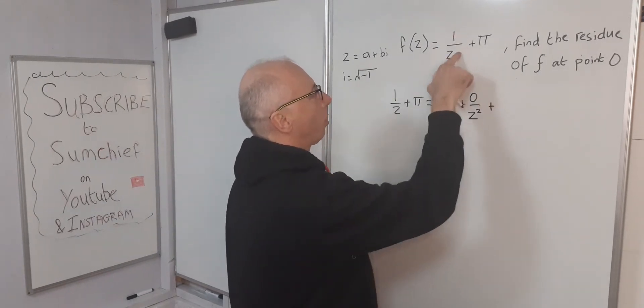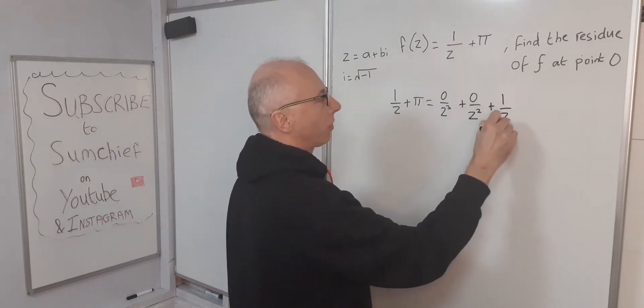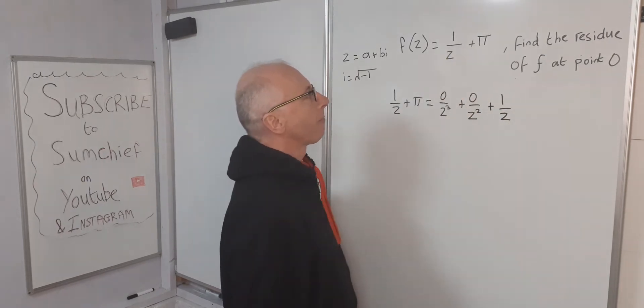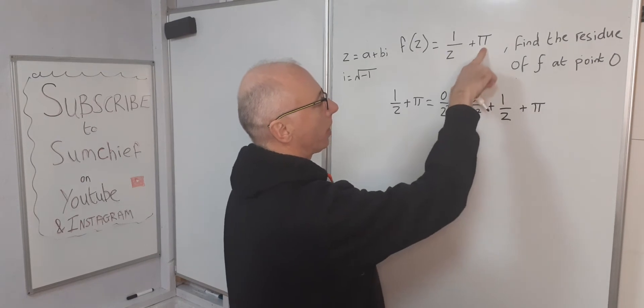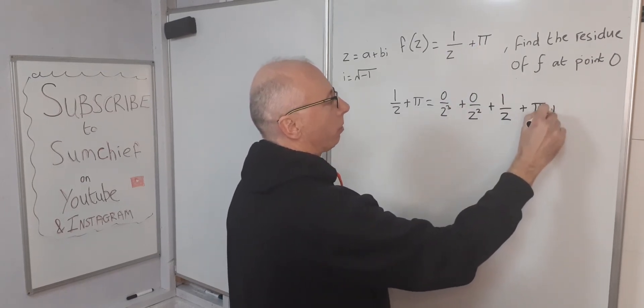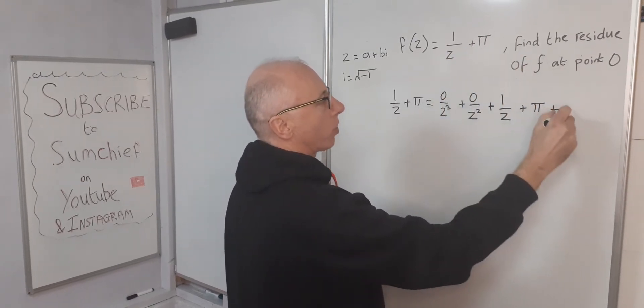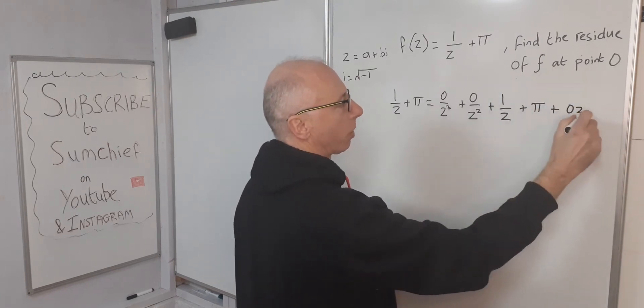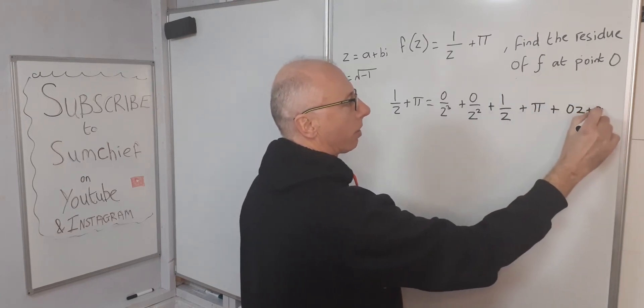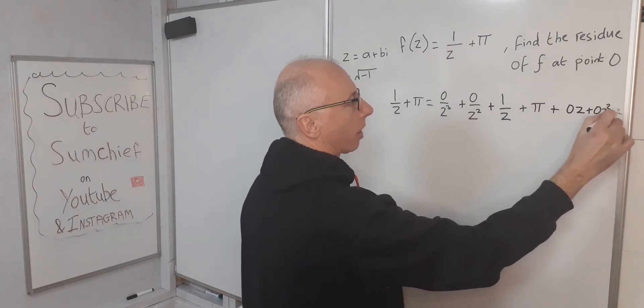Then we say plus one over z - we've got the one over z, so that's z to the minus one. And then plus pi. Pi is the constant term. For the powers of z, they're all zero because there's no z's in there or z squareds. So zero z, zero z squared, and so on.